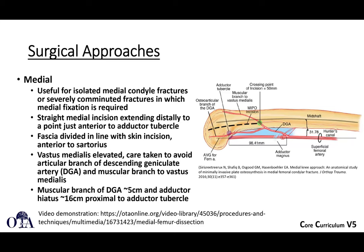Medial approaches are useful for isolated medial condyle fractures or comminuted fractures requiring dual fixation. A straight medial incision extends distally to just anterior to the adductor tubercle; divide the fascia in line with the incision, anterior to the sartorius, and elevate the vastus medialis, taking care to avoid the articular branch of the descending geniculate artery and the muscular branch of the vastus medialis.